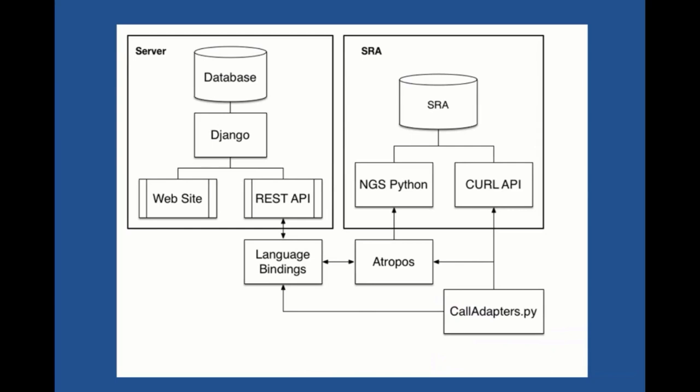We're also really interested in streaming data. We built a database of adapters that are present in the SRA. The neat thing about that is if you know what the adapters are in SRA for your particular dataset, you can trim the adapters on the fly. So if you want to do some assembly and generate contigs, you don't have to do fastq-dump anymore — you can simply trim your adapters on the fly and build contigs from streaming data, which I think is very attractive given NCBI infrastructure and genomic data getting larger.